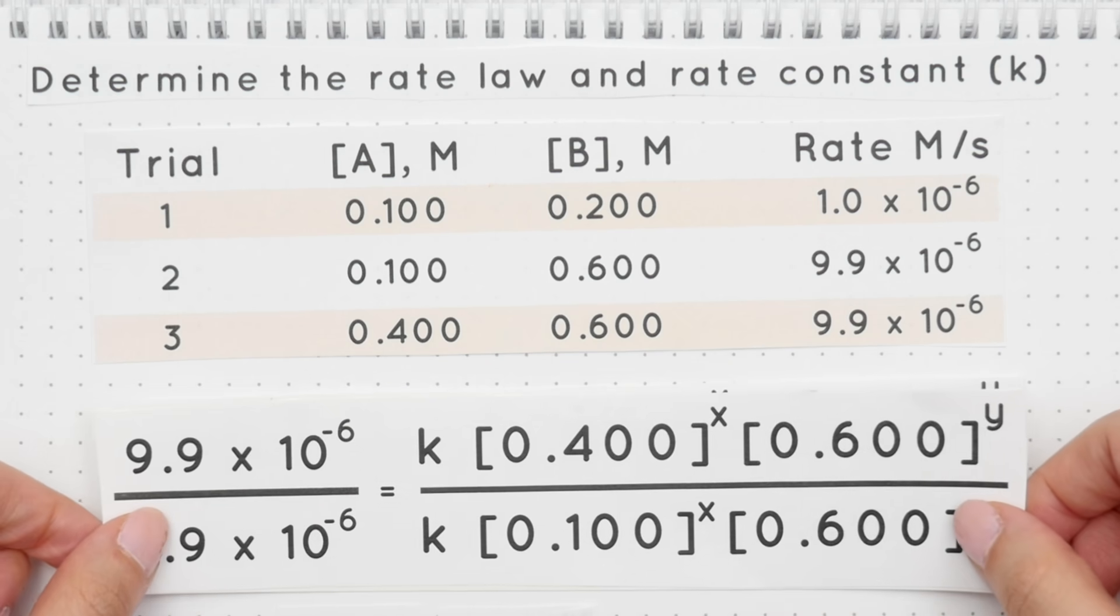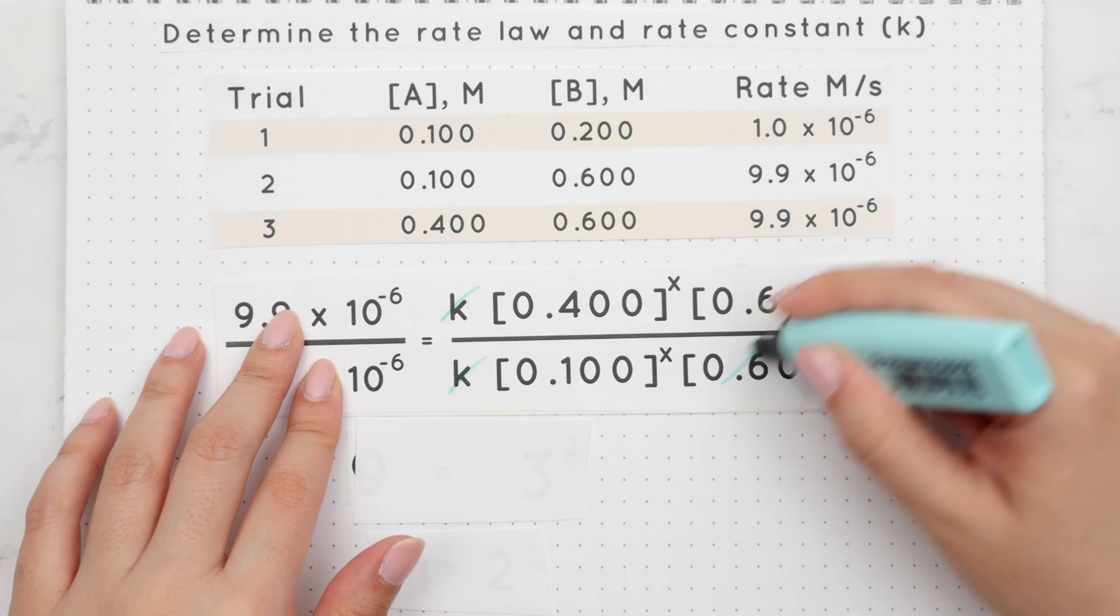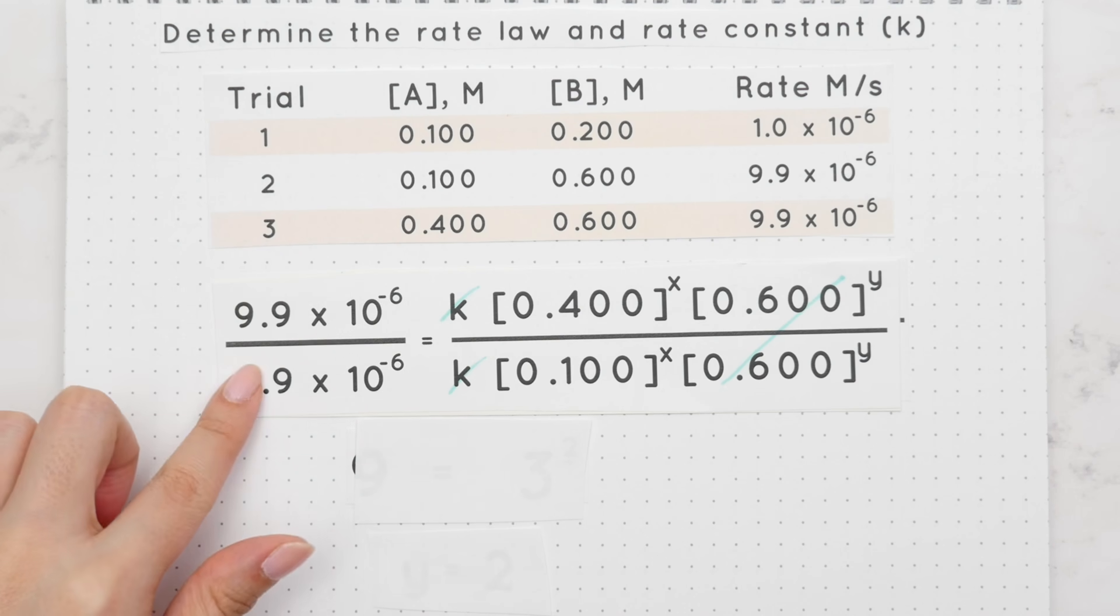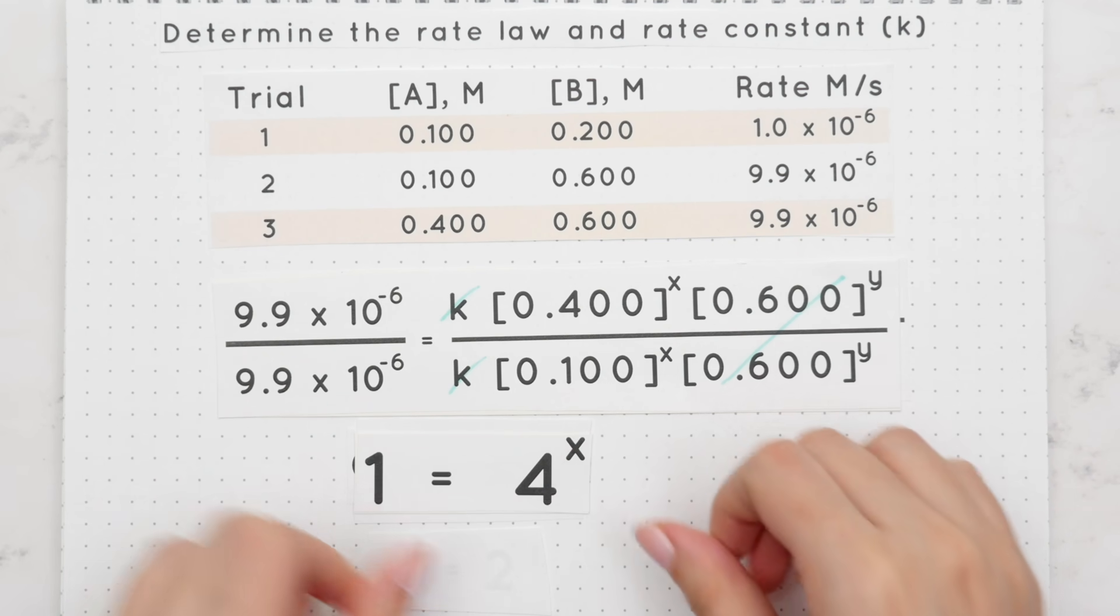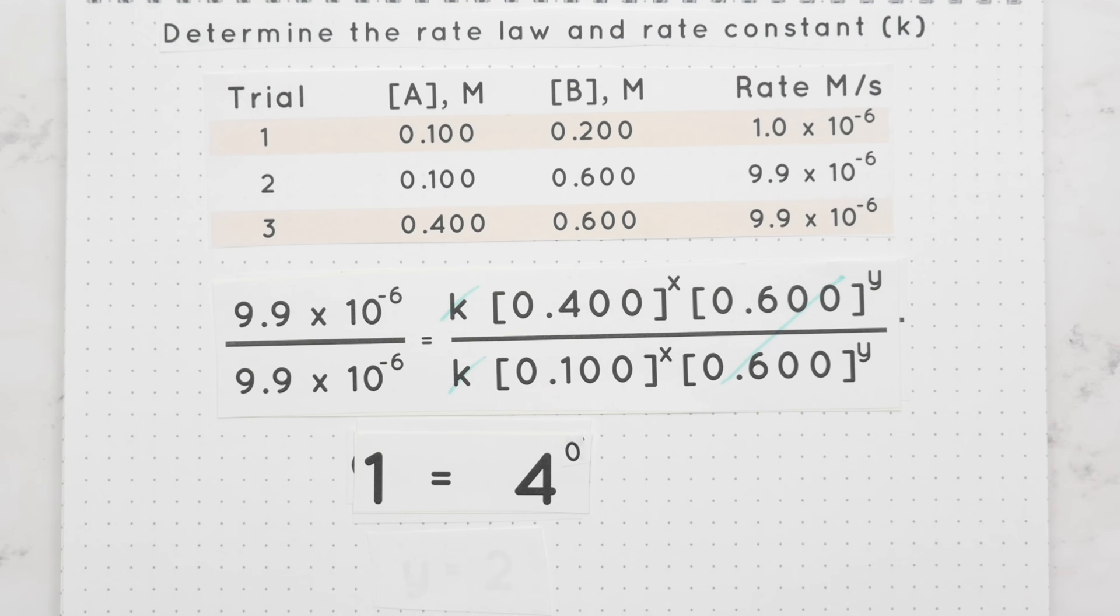When we plug everything in we get this. We can cancel the k's and the y's, and when we divide the left side we get 1. Dividing 0.4 by 0.1 gives us 4 to the power of x. Now for this one, remember anything raised to the zero power is 1, so x must equal 0.